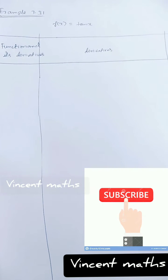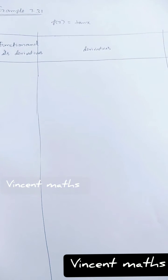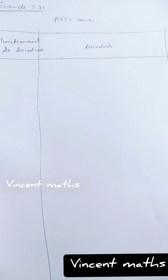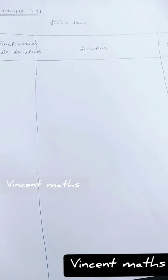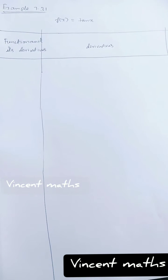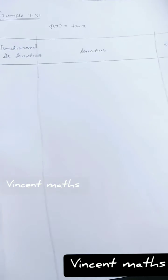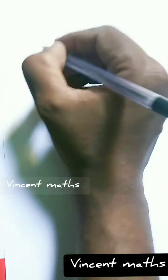We are going to use the Maclaurin series. Students find it very difficult to differentiate this. This is an easy method. How do we differentiate this? First, what is the formula of the Maclaurin series?